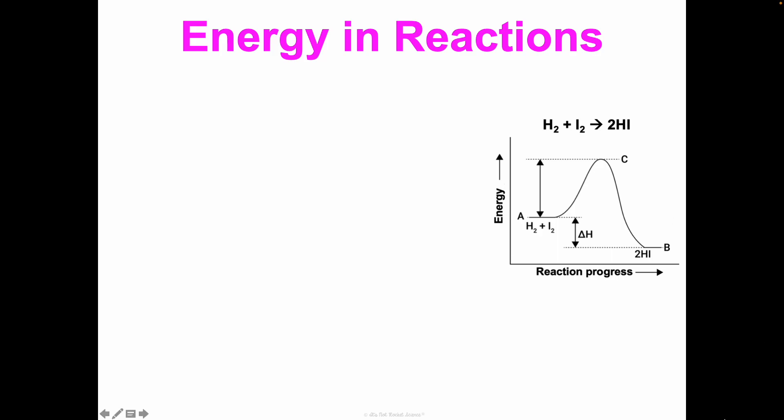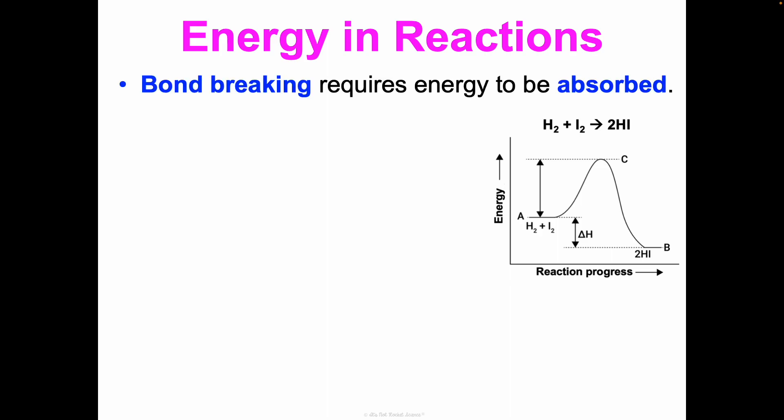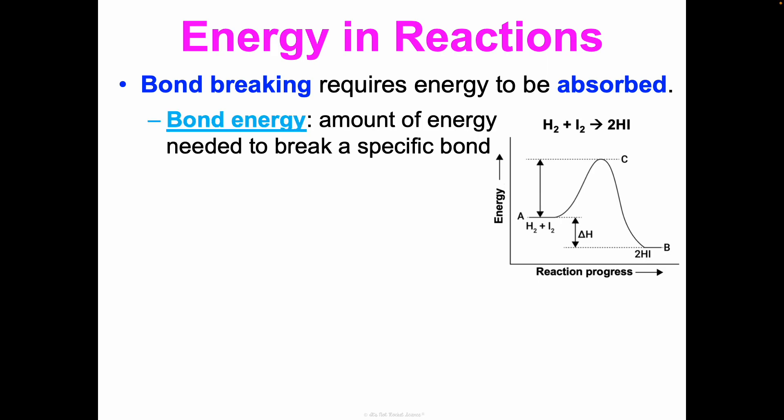This is one of the most important distinctions I can make for you in your science career, especially those of you who are biologists and into biochemistry. Bond breaking requires energy to be absorbed. Every bond has a certain amount of bond energy — the amount of energy needed to break that specific bond. For example, two carbon atoms single bonded together have a bond energy of 347 kilojoules per mole — that's how much energy needs to be absorbed to break that single bond.